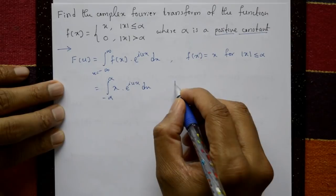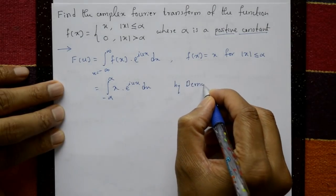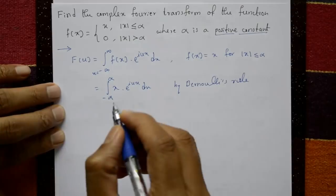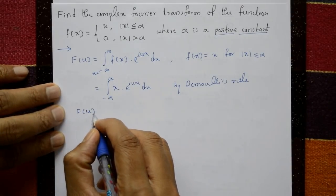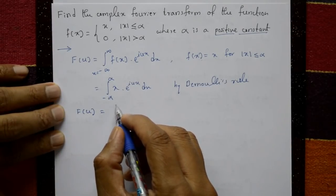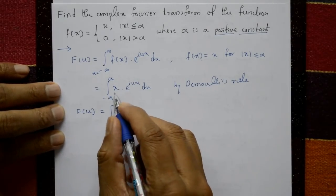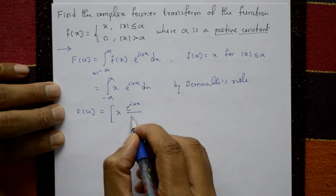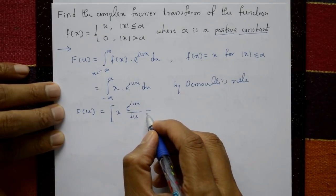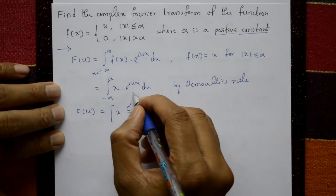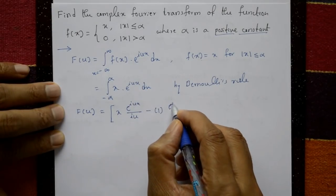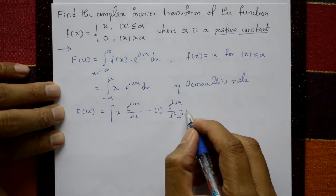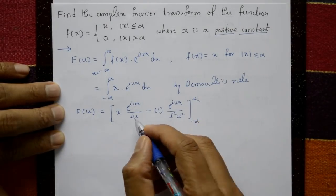Applying Bernoulli's rule (integration by parts): f̂(u) equals x times e^(i·u·x)/(i·u) minus the integral of 1 times e^(i·u·x)/(i·u) with respect to x, which gives a second term of e^(i·u·x)/(i²·u²), all evaluated from minus α to plus α.